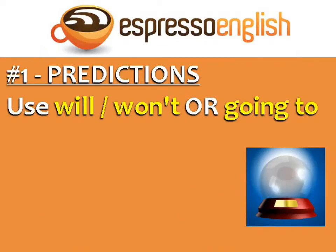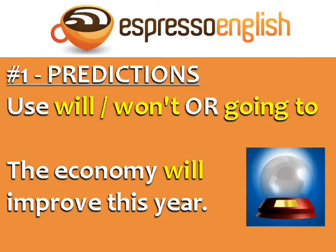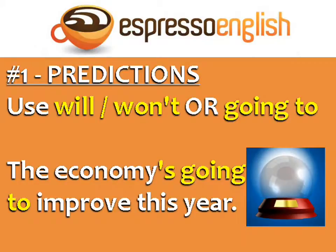For predictions, use will, won't, or going to. For example, 'The economy will improve this year' is the same as 'The economy's going to improve this year.'